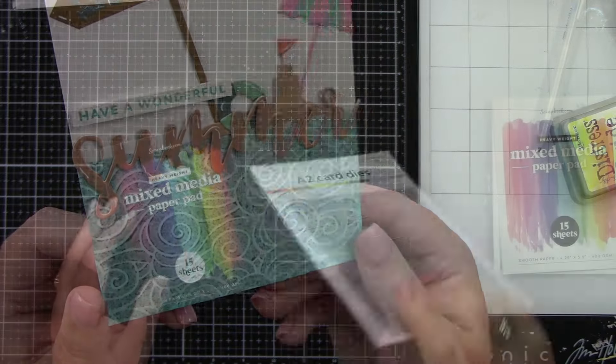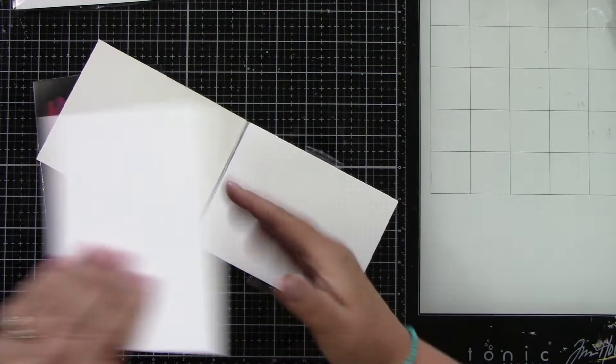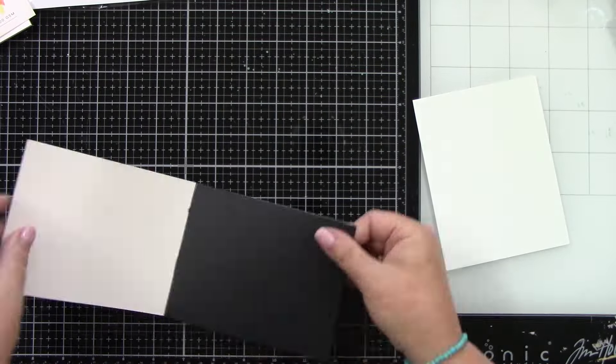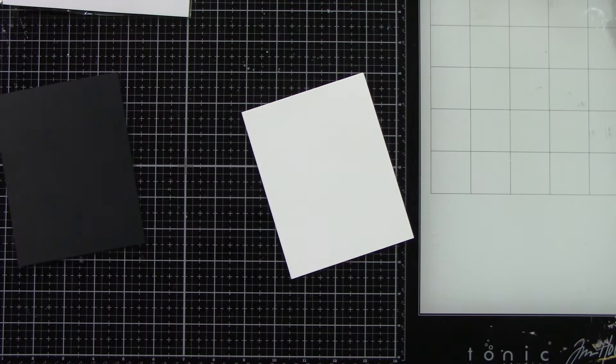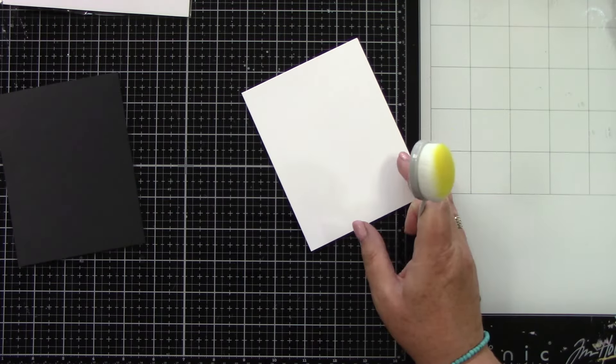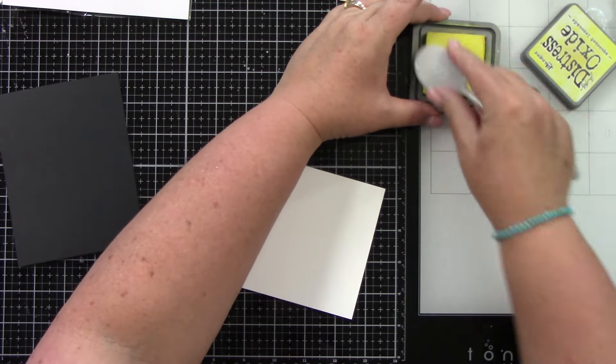Oh my gosh, it's so pretty. Okay, let's go on to our next card. I'm going to use the mixed media white paper pad and black paper pad. I used the mixed media white for the first card as well. So this card here, I am going to ink blend with squeezed lemonade. We're going to do an ombre effect.